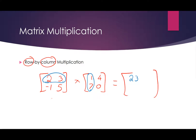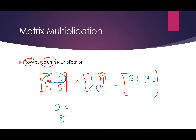So 23 is the value of the first row, first column element in this new matrix. If I want to know what the A12 element is — the first row, second column — I'm going to multiply the first row of this matrix times the second column of this matrix. So 2 times 4 is 8, and then 3 times 0 is 0. So 8 plus 0 is 8. That element is 8.